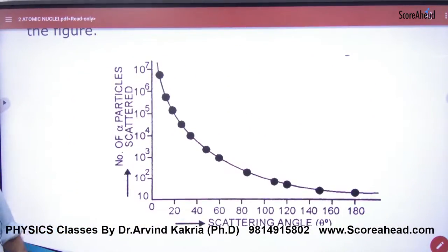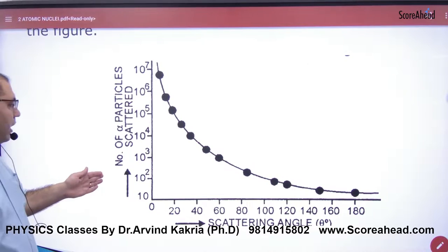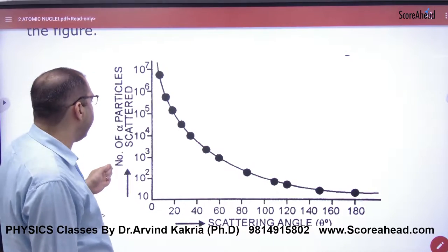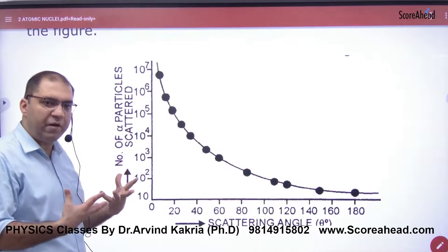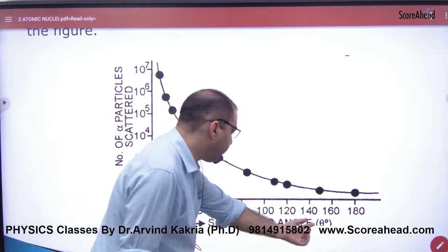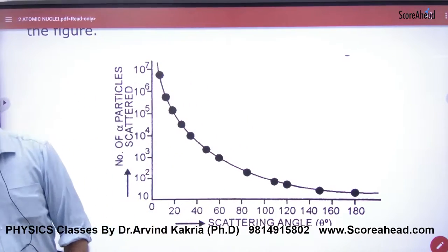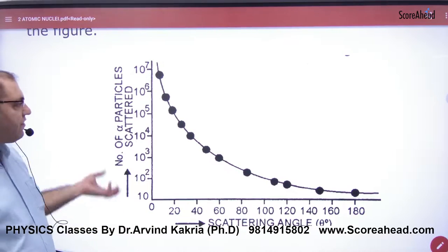This graph, let's take this graph, which is number of alpha scattered particles. How many alpha particles scattered with respect to scattering angle theta. Scattering angle theta, number of alpha particles.